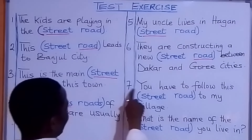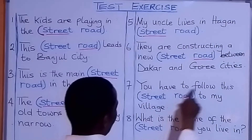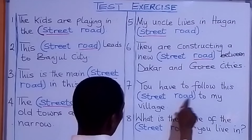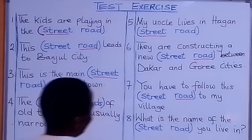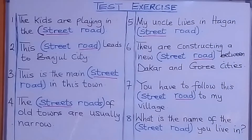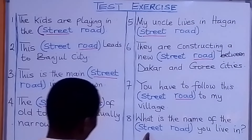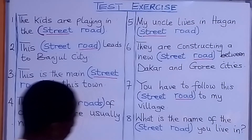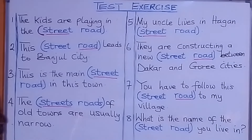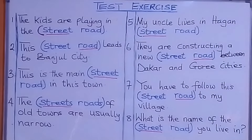Look at number seven: 'You have to follow this [street / road] to my village.' What are we going to put there? You have to follow this road to my village. Number eight: 'What is the name of the [street / road] you live in?' What are we going to put there? What is the name of the street you live in?